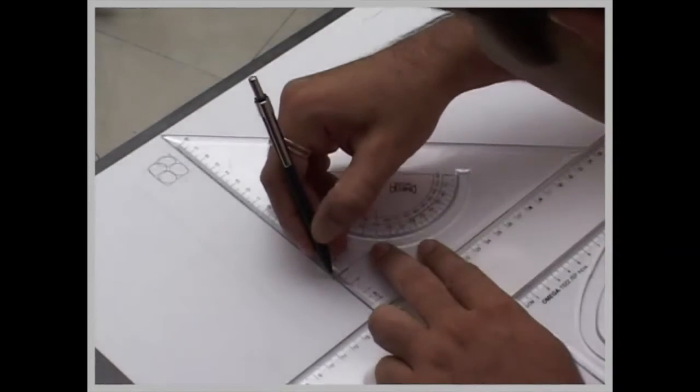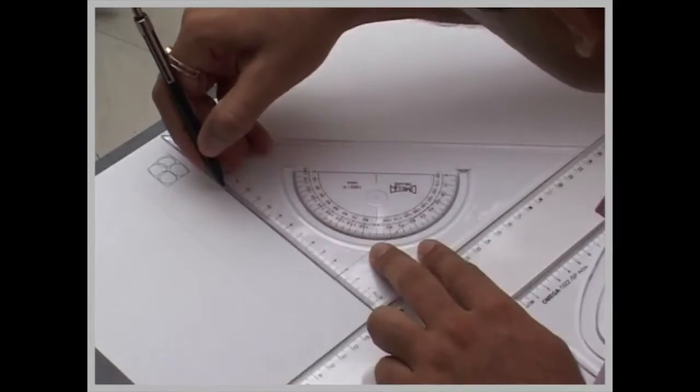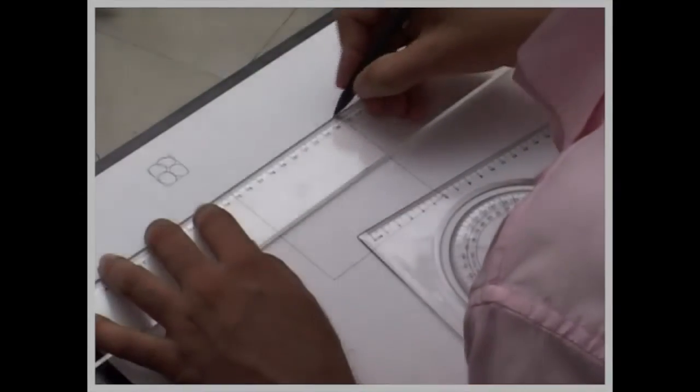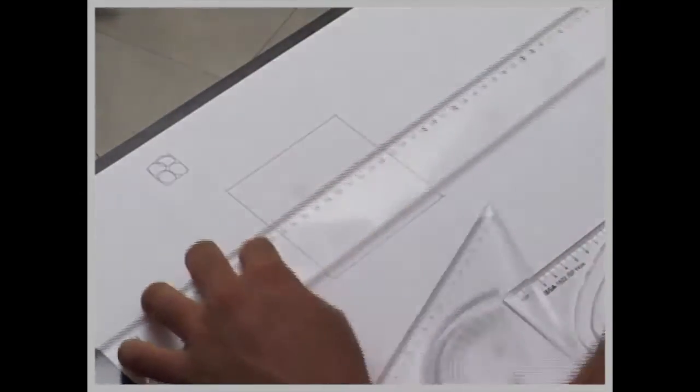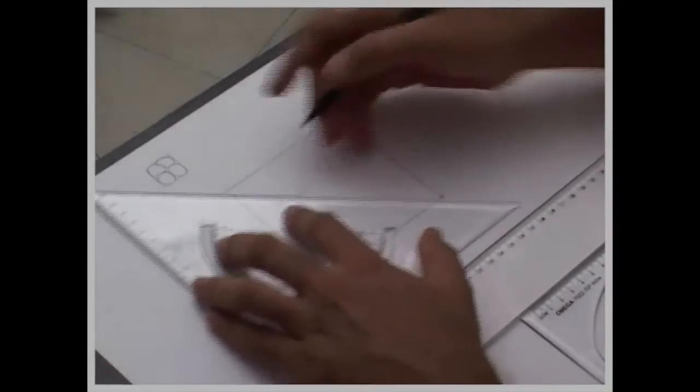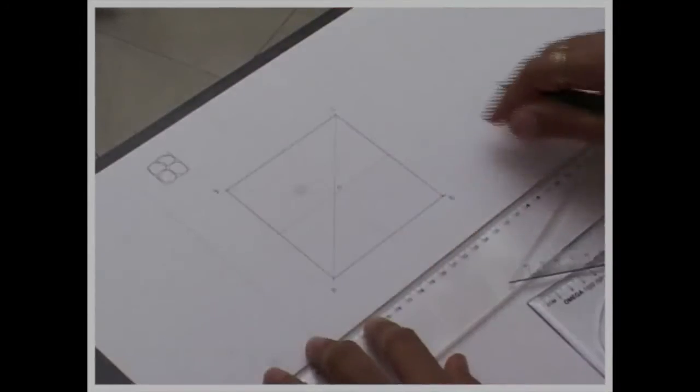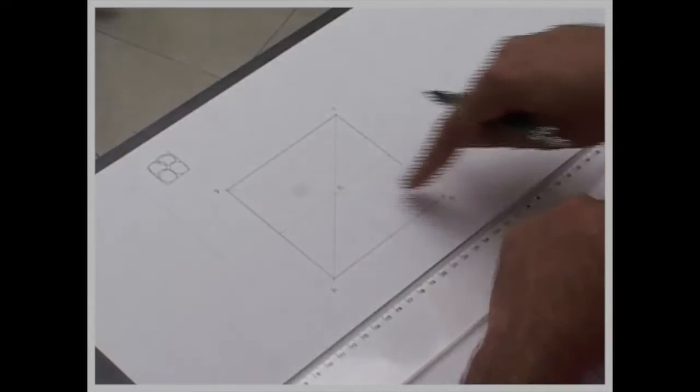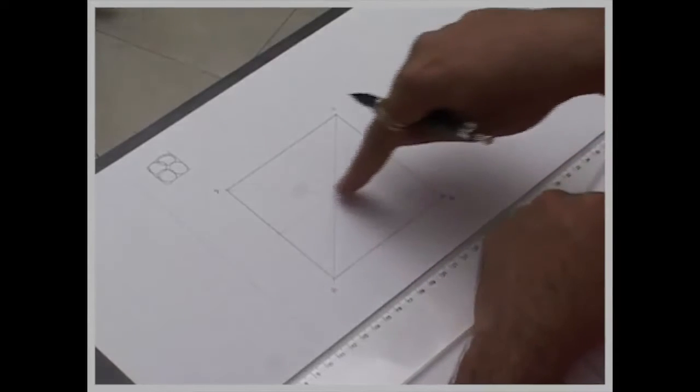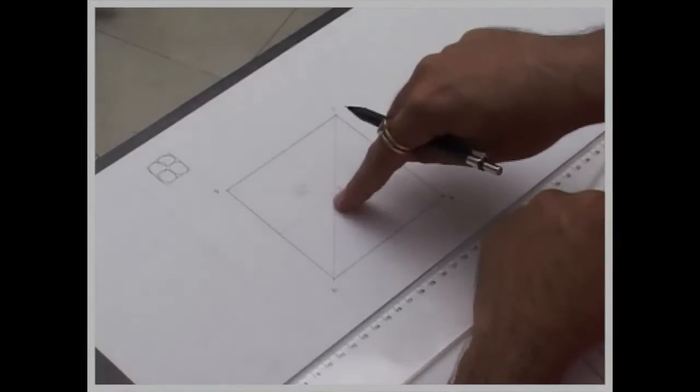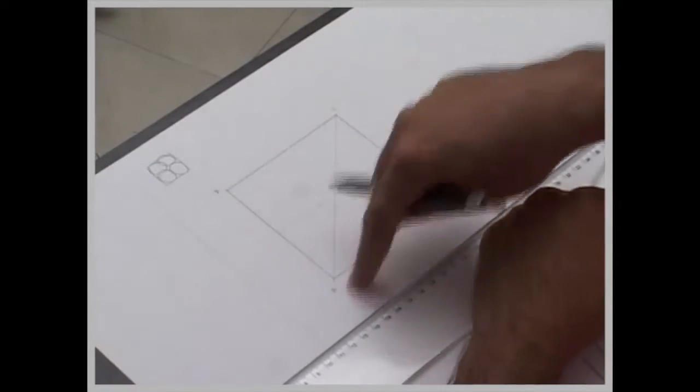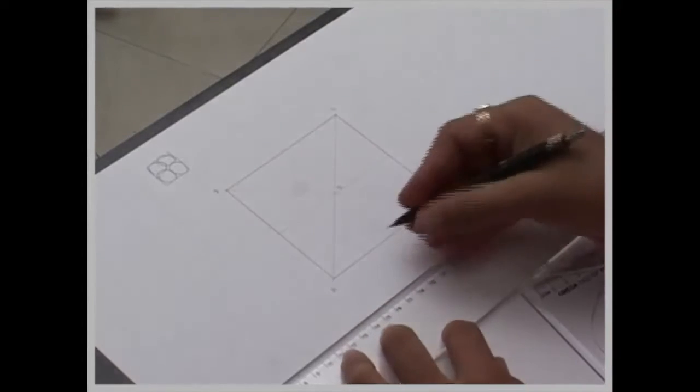now same method, now we have divided square into four parts, triangle OAB, triangle OBC, triangle OCD and ODA, so we have divided into four parts, this is point L, now what I have to do, again I have to take 45 degrees,